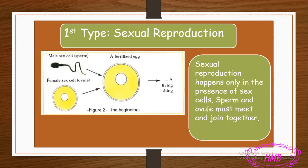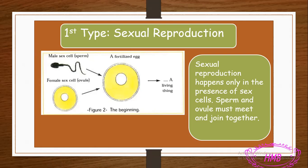For example, a male fish releases its sperm into the sea water, and the female fish throws its eggs — its ovules — into the same water. The sperm and the ovule can then join in the water. When they join, sexual reproduction happens. Sexual reproduction happens only when sperm and ovule join together; if they don't join, there is no sexual reproduction. It's called sexual because the two sex cells are involved.